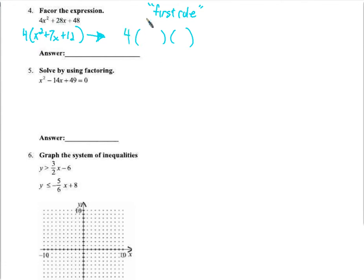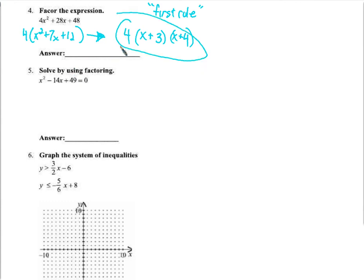So 4 times what? I'm going to use x times x to get x squared, and something times something to get 12 — and that same something and something also has to add up to 7. 6 times 2 is 12 but doesn't add to 7. 12 times 1, no. 3 and 4 — yes. 3 times 4 is 12, and 3 plus 4 is 7. So that's the factored form.